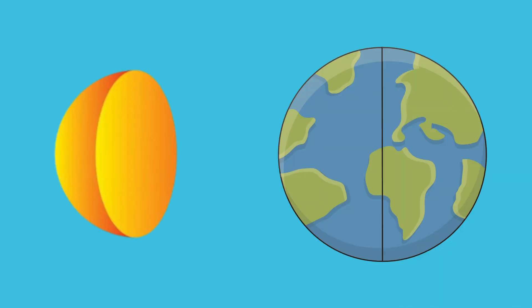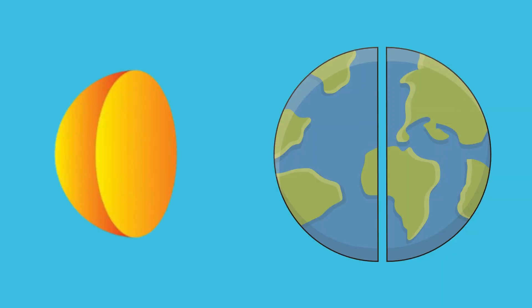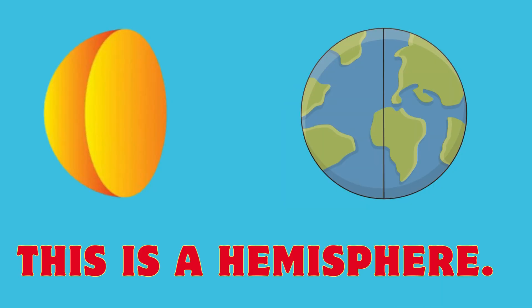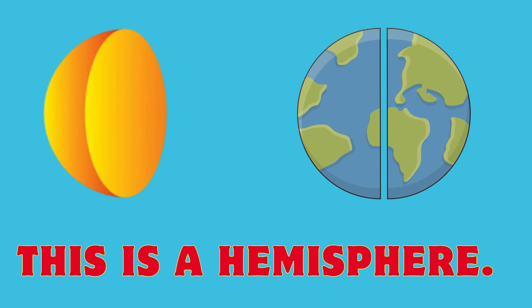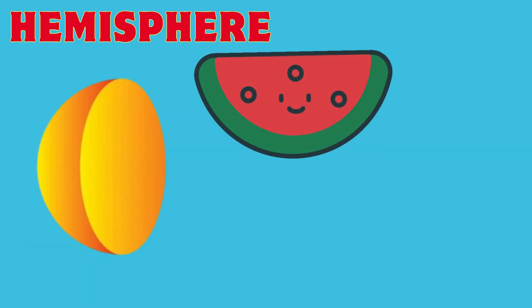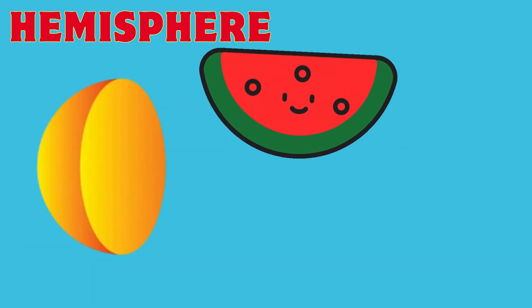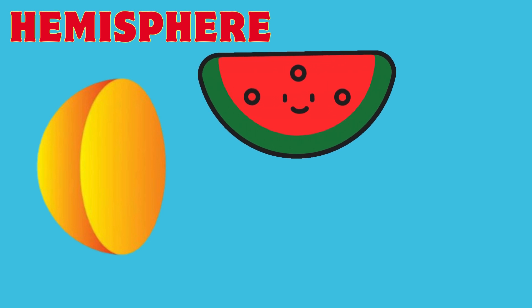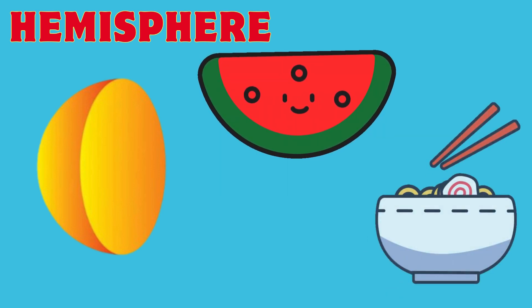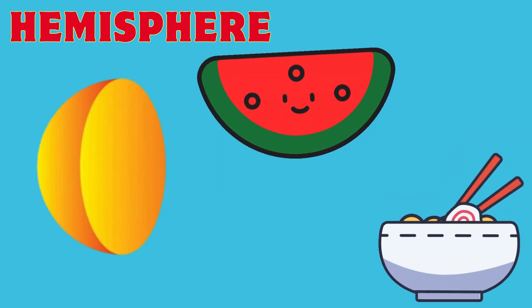What shape is it? This is a hemisphere. This watermelon is a hemisphere. This bulb is a hemisphere.